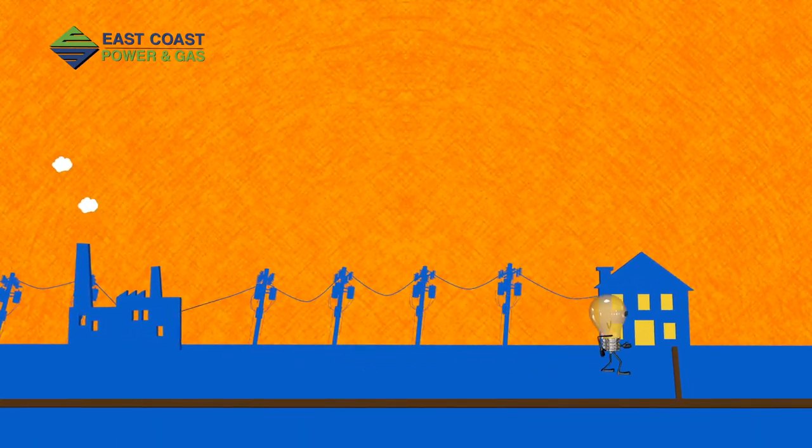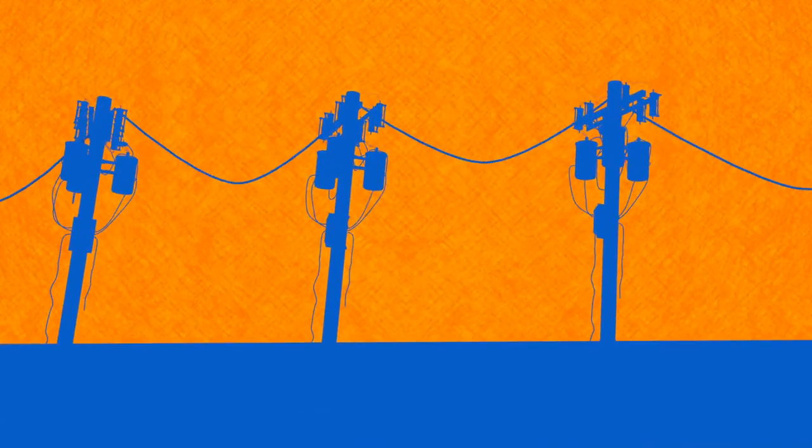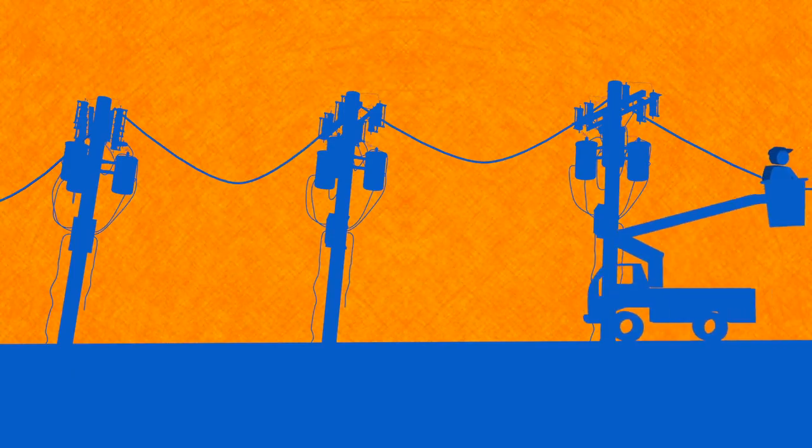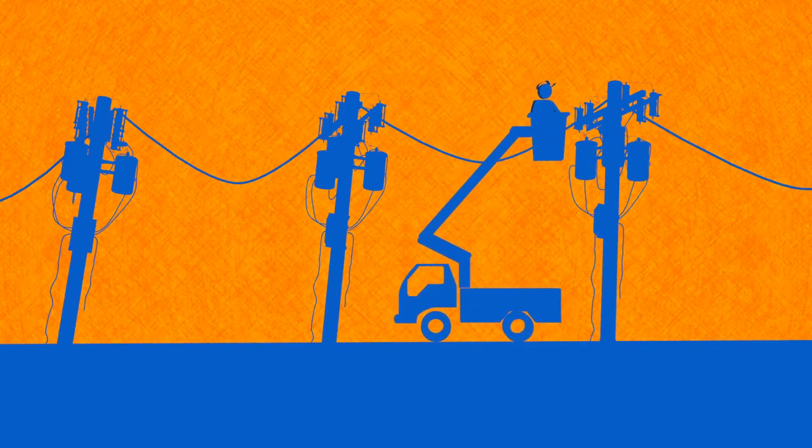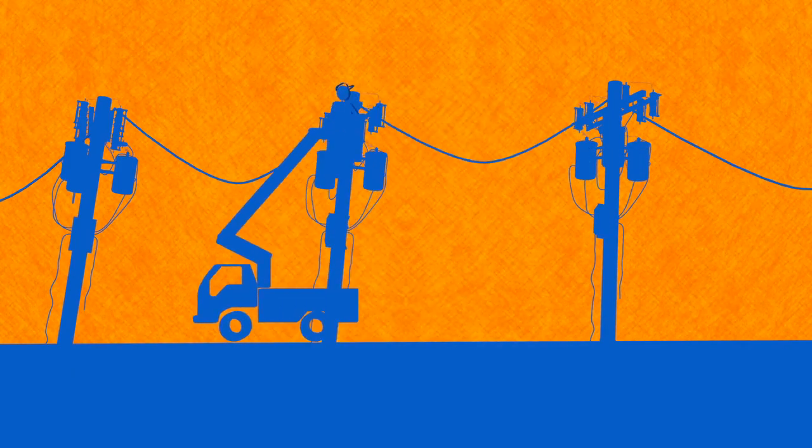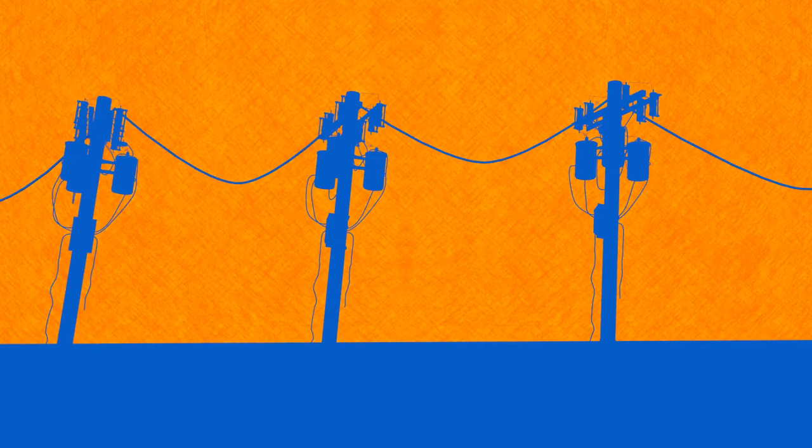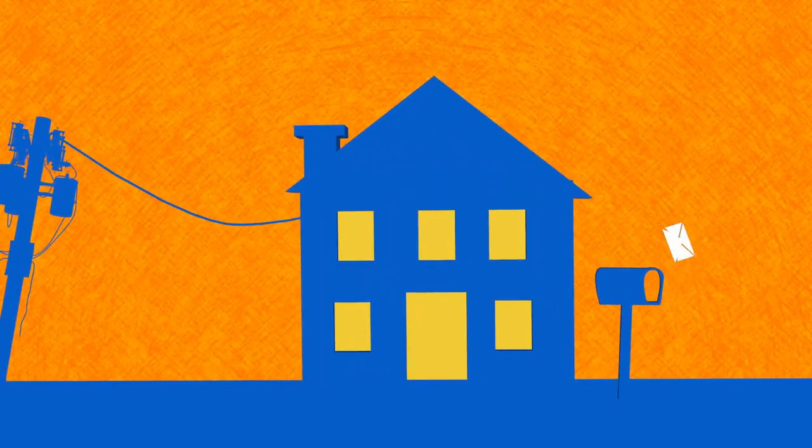And by the way, the things that always worked before deregulation? We're keeping them of course. Your electricity and gas service functions the way it always did with no interruptions. Energy comes to you the same way, through the same underground pipes and overhead poles and wires.